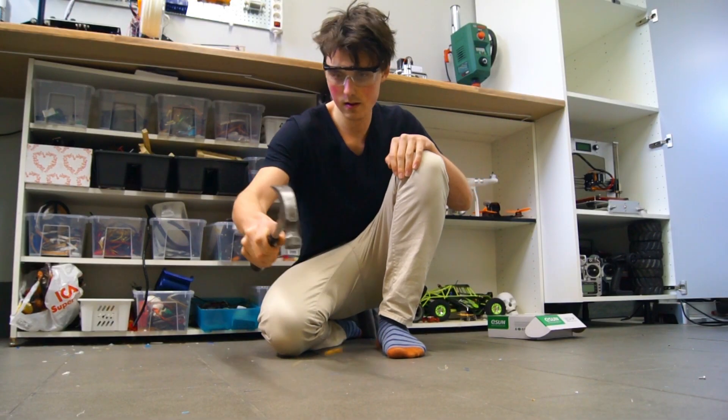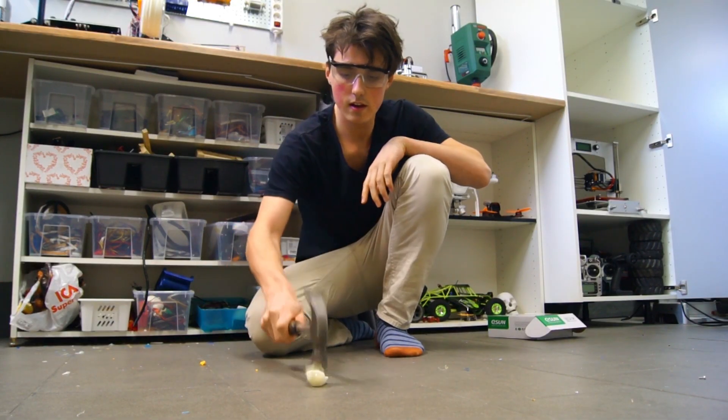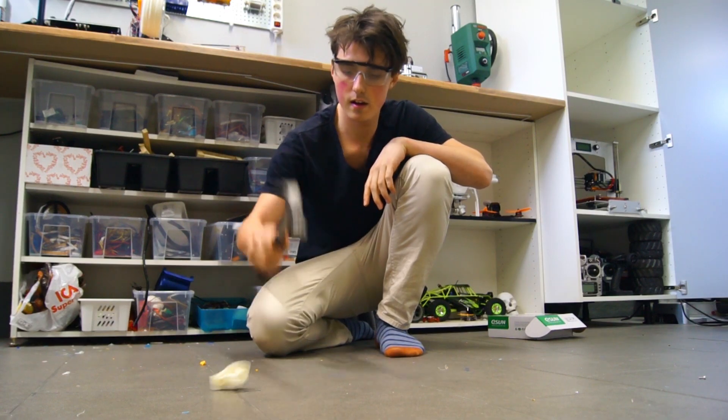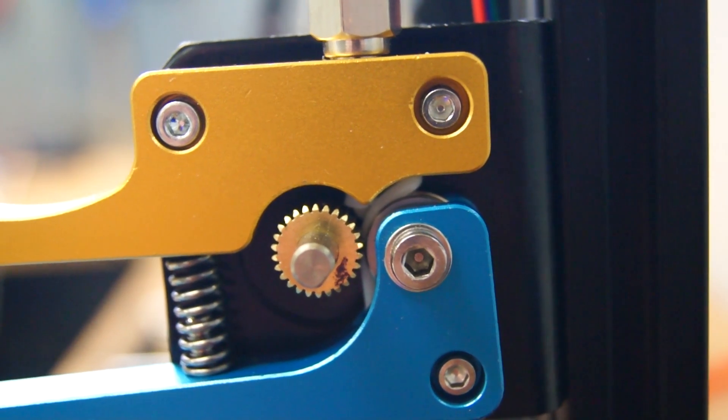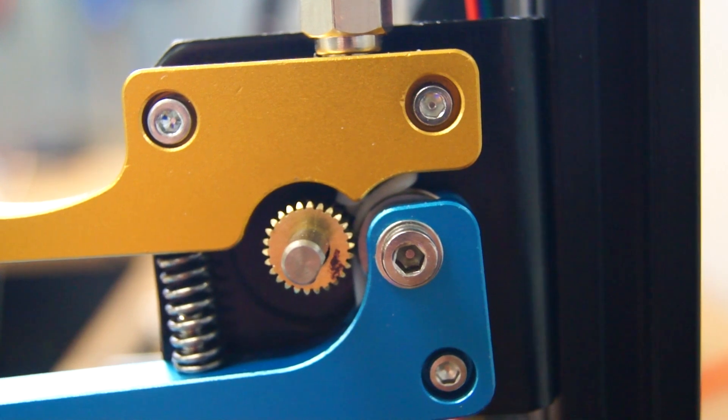Unlike PLA that shatters, flexible filament will simply absorb the shocks. Alright, let's go back to the Tarantula. How do we stop the filament from flexing inside the extruder?